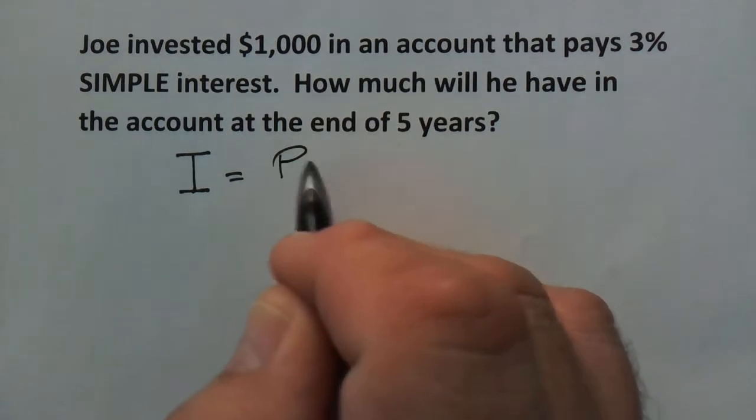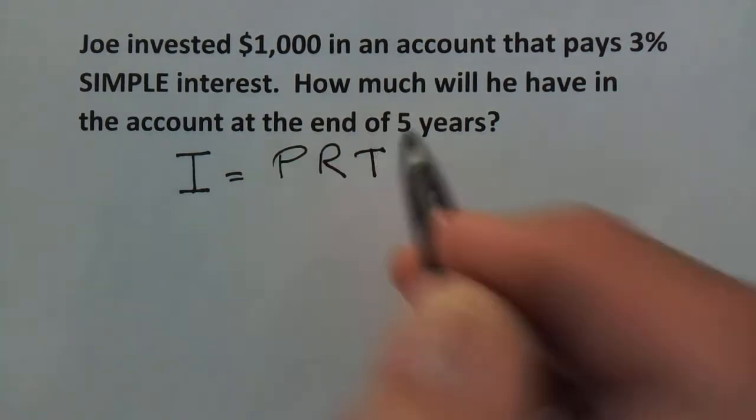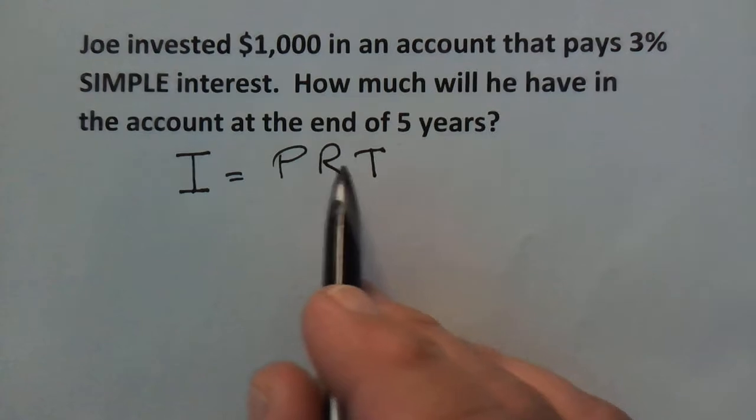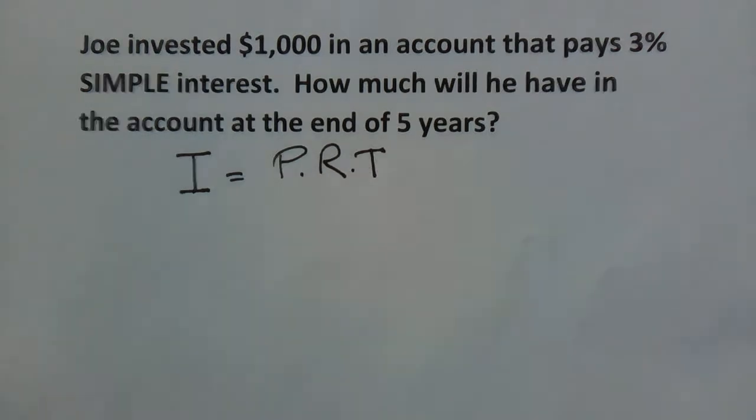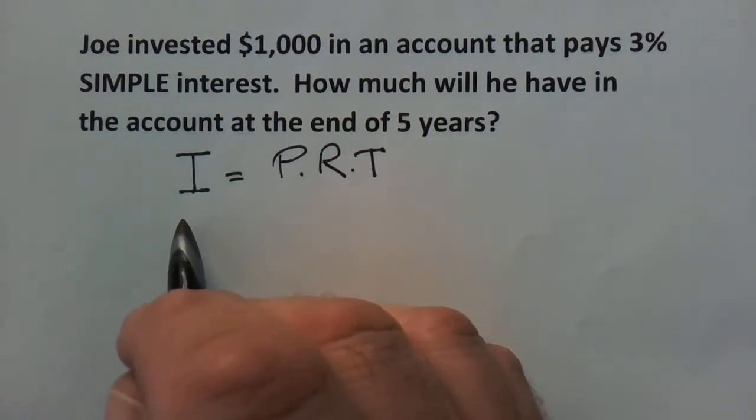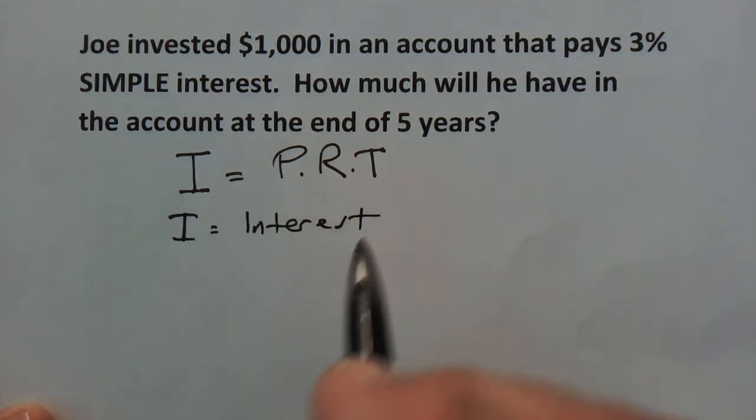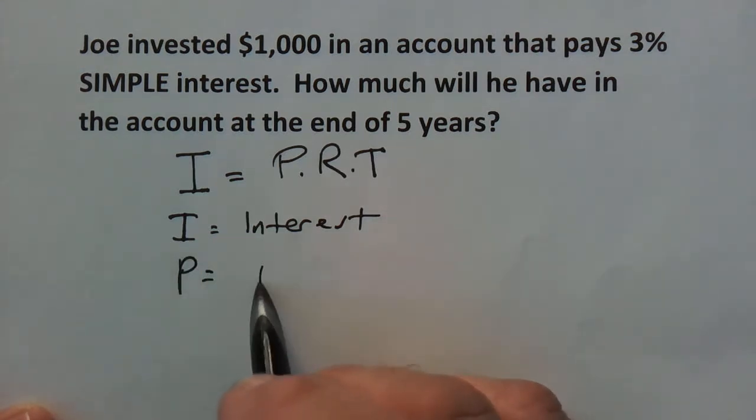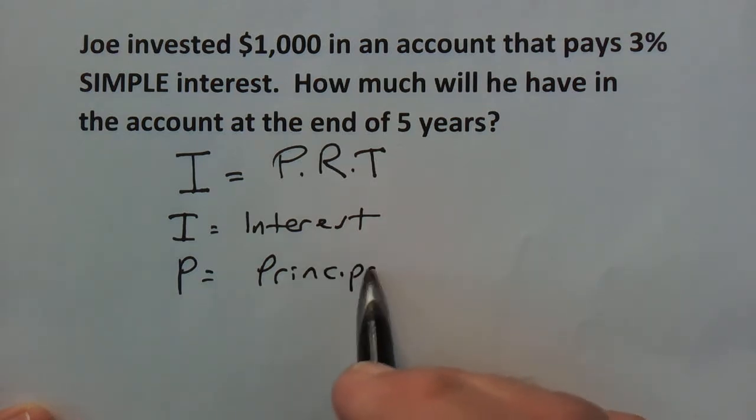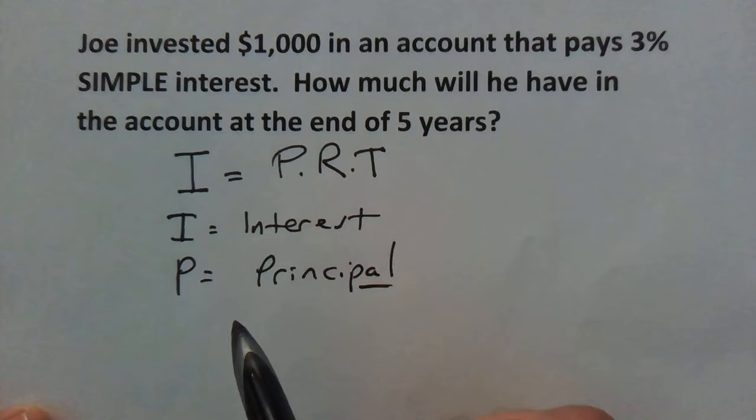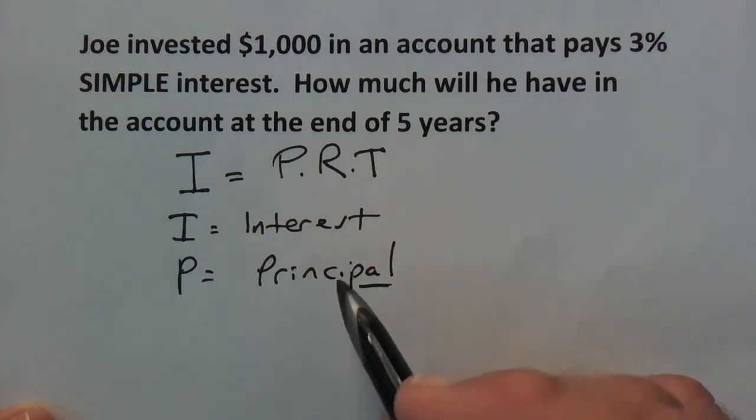I equals PRT is that formula and since these letters are right next to each other that just means they're multiplied by each other. What do these all mean? The I in this is interest - in other words how much interest does this account earn? The P is the principal and that's spelled with a PAL and that is the amount that you put into the account or in the case of a loan it's the amount that you borrowed.